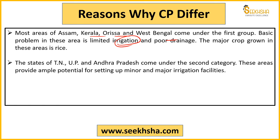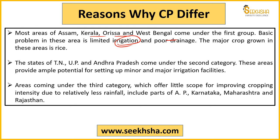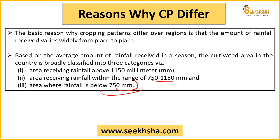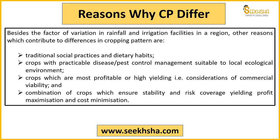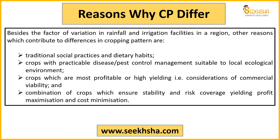Tamil Nadu, Uttar Pradesh, and Andhra Pradesh areas mostly fall in the second category, between 750 mm and 1150 mm, where mini and major irrigation facility potential also exists and considerable development has also happened. In the third category come Andhra Pradesh, Karnataka, Maharashtra, and some areas of Rajasthan where rainfall is quite low — below 750 mm.